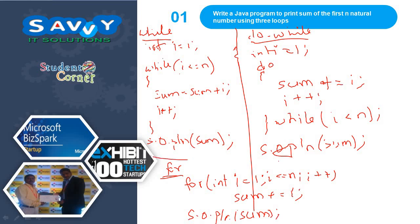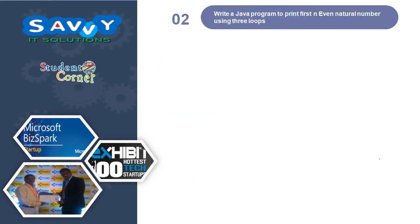This is how the three loops are working. In this way we are finding the sum of the first n natural numbers. In the previous video we discussed printing the first n natural numbers; here we are discussing the sum of the first n natural numbers. So coming to the second program: write a Java program to print the first n even natural numbers using three loops.